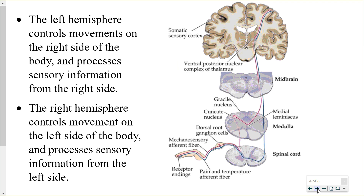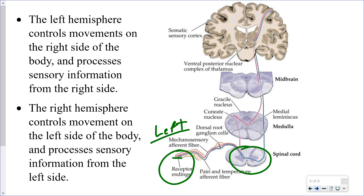There is a 100% crossover of information, whether motor or sensory. Sensory receptors in a fingertip send information into the spinal cord, where it crosses over to reach the opposite side of the brain. Sensory information from the left hand crosses to the right side of the brain. Similarly, if you're moving the left finger, it is the right primary motor area that is responsible for that movement.